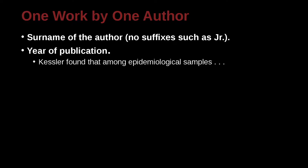What about one work by one author? In this case, like APA, we use the family name — not the first name, not the middle name. We use the family name, and here we have Tesler. Tesler found that among epidemiological studies something something something. In this case, we're not going to include the page number, because it's the whole work. We're just saying that whole paper is what I'm citing, so we don't have to have the parentheses with the page number, like 152, if the whole thing is what we're citing.